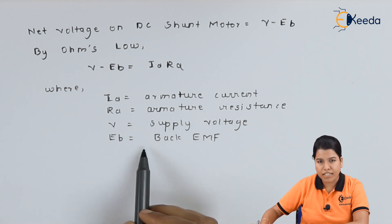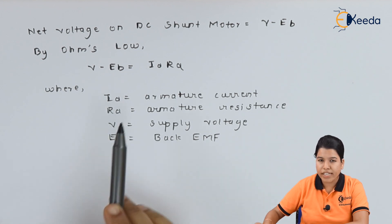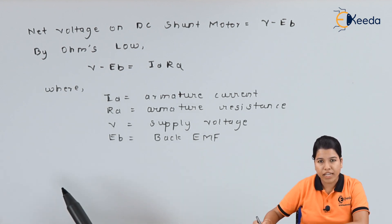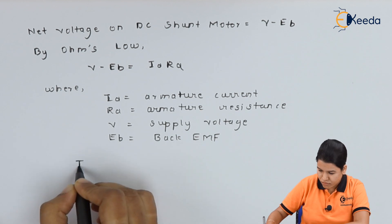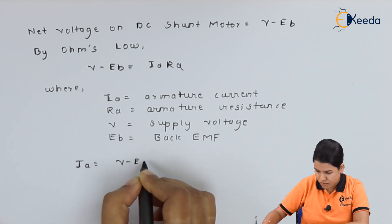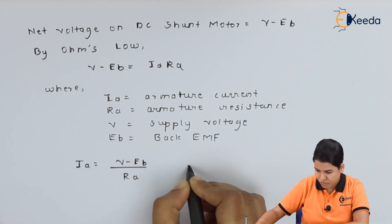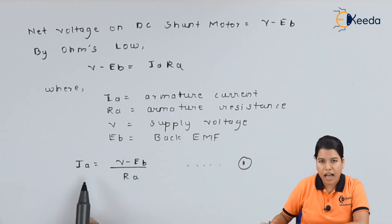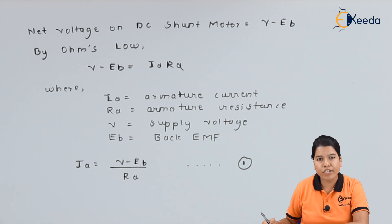Now rearranging the above equation we get: Ia is equal to V minus Eb upon Ra.